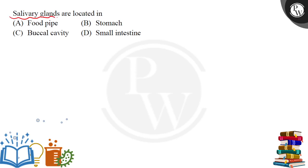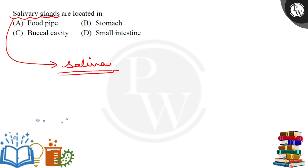Salivary glands are the glands that produce saliva. Now what is saliva? Saliva is basically a fluid-like substance that is produced in our mouth.